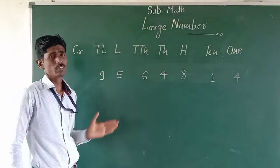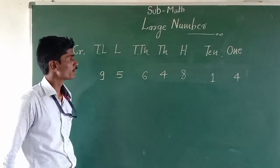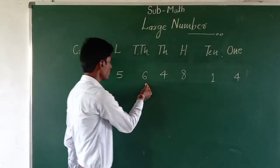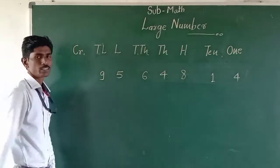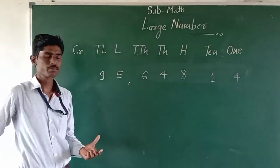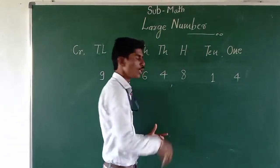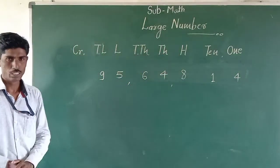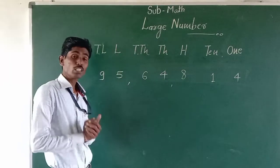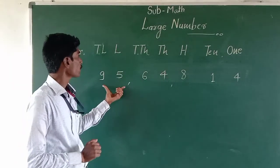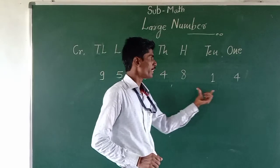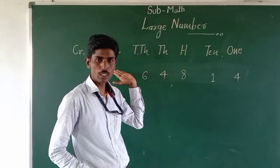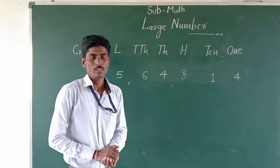So due to the digit places, we can call this number. The value of this number is 95,64,840. How we call this number — 95,64,840 — is determined because of the digits and their place values.